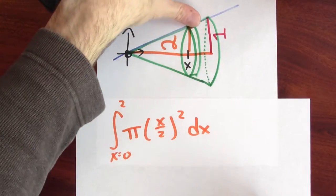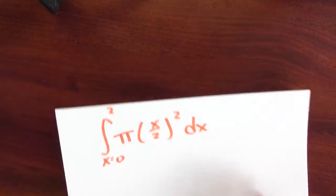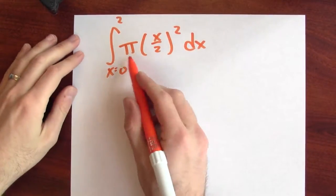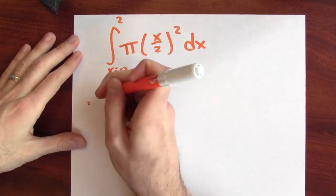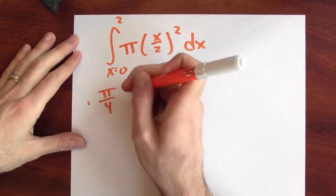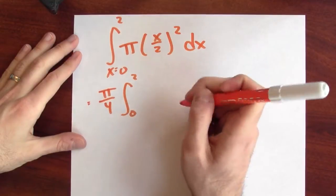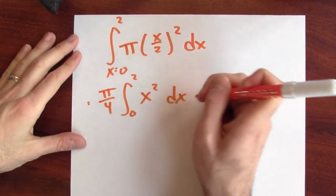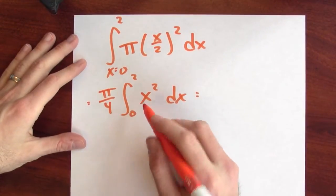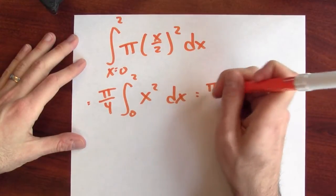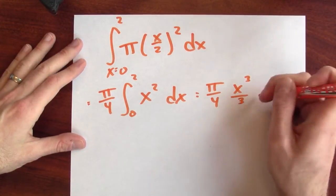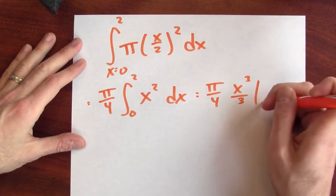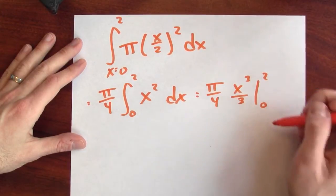And now we use the fundamental theorem of calculus. I can simplify this a bit. I've got some constants here I can pull out. I can pull out the pi and 1 half squared. So this is pi over 4 times the integral from 0 to 2 of x squared dx. Now what's an anti-derivative for x squared? x to the third over 3. And then I'm evaluating that at 0 and at 2 and taking the difference.